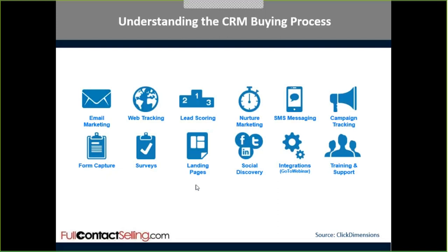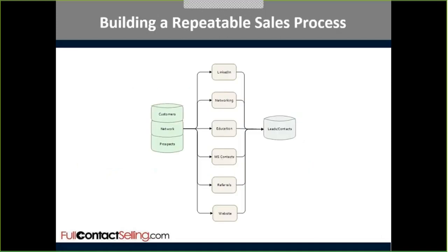If they come to the website, download something, come to a webinar and attend it, at that point it may go to a field salesperson. We can start to build rules within our sales process aligned with what they're doing in their buying process — this is where it gets into the CSI type stuff. For small businesses who say they can't really do this — well, you can't afford not to, and there are lots of off-the-shelf products that will make it easier. Click Dimensions for marketing and Dynamic CRM Online are pretty easy to get up and running and do take some planning, but it can be done at that scale.